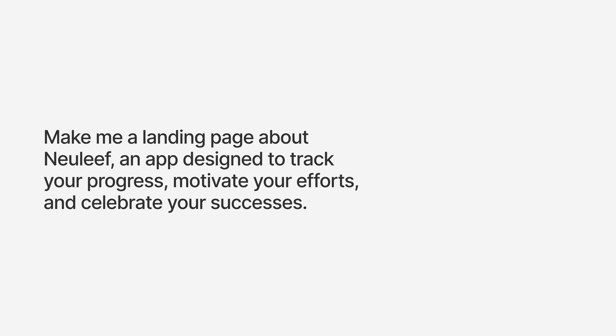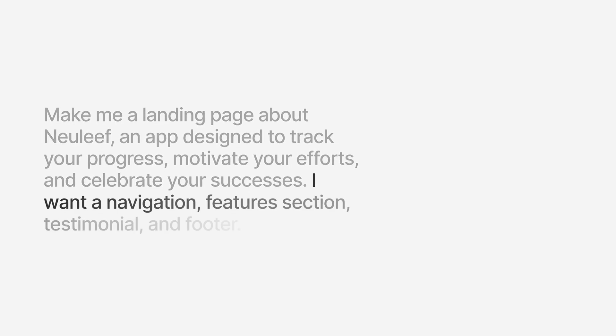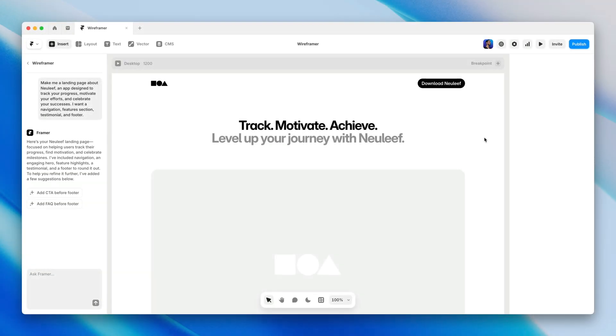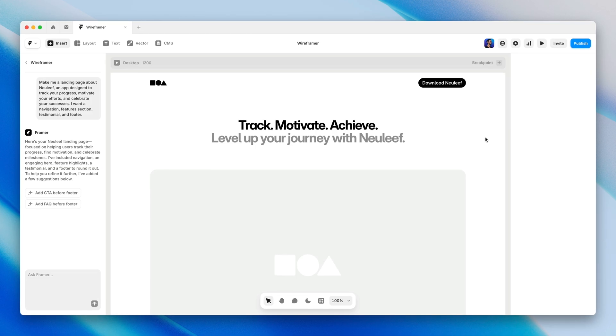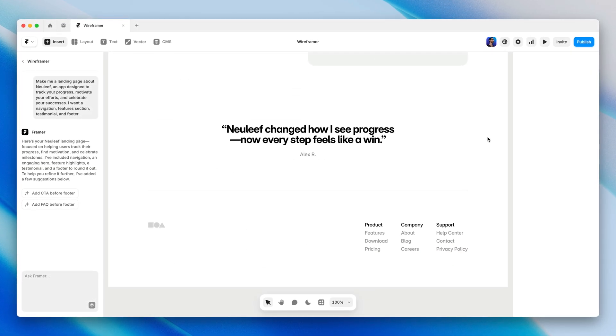Another improvement we can make is to specify the sections we want to generate. We can add something like: I want a navigation, feature section, testimonial, and footer. And now we're getting something that actually matches our desired information architecture.